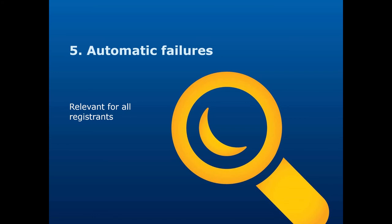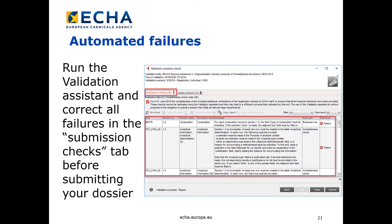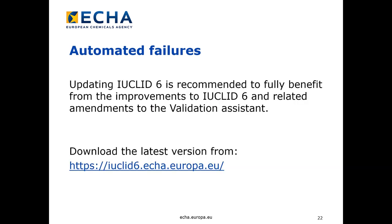The following part is about automated failures and is relevant for all registrants. Remember to validate your substance dataset and correct any failures reported in the submission checks tab before creating your dossier. Validate also the final dossier before exporting it and address any issues identified. Any failure in the validation assistant submission checks tab that is left uncorrected will lead to the rejection of your submission. Using the latest IUCLID 6 version is recommended to fully benefit from improvements and related amendments to the validation assistant. You can download the latest version from the IUCLID system.